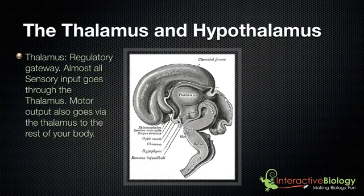First we have the thalamus, and the thalamus is kind of like a regulatory gateway. The reason I say that is almost all of the sensory input that comes into the brain goes through the thalamus, and the motor output goes via the thalamus to the rest of your body. So it brings stuff into the brain — this is the gateway that kind of regulates what comes in and what goes out. That's the function of the thalamus.